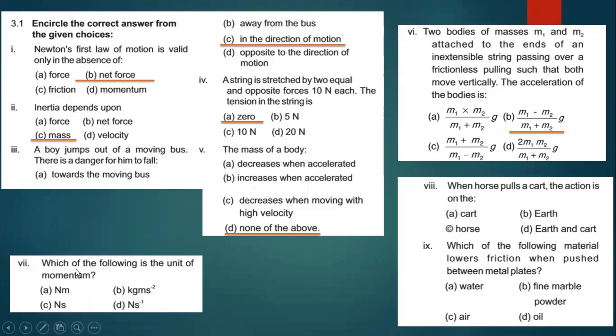Part seven: which of the following is the unit of momentum? Option C is the right answer — Newton second. The momentum formula is P equals mv, so the unit is kilogram meters per second, which is equivalent to Newton second.